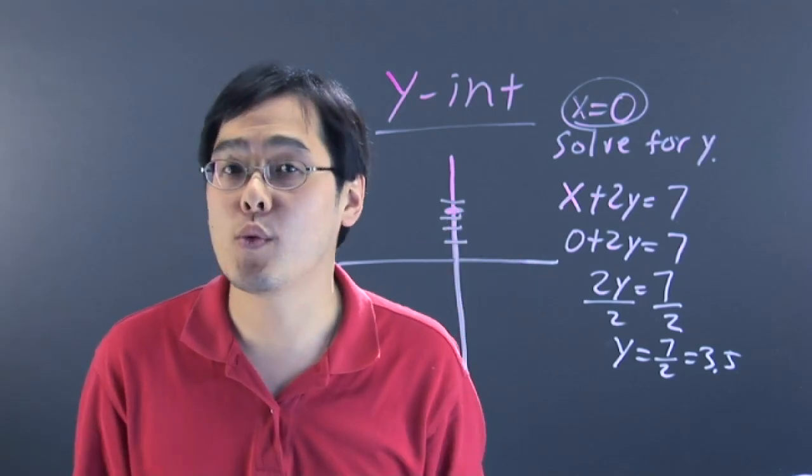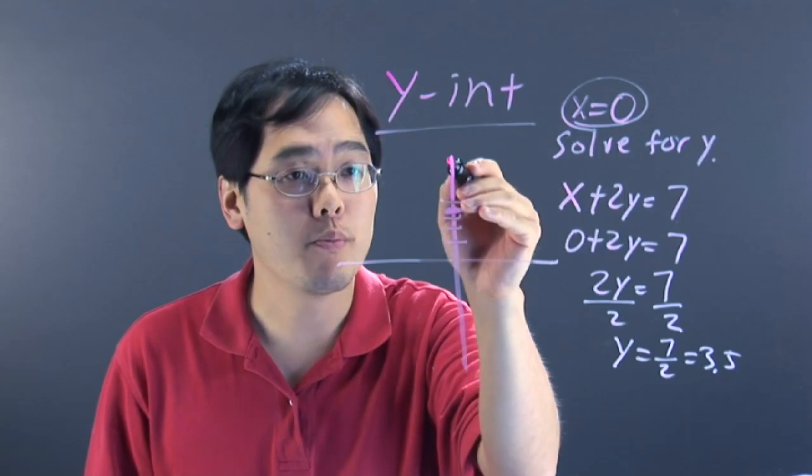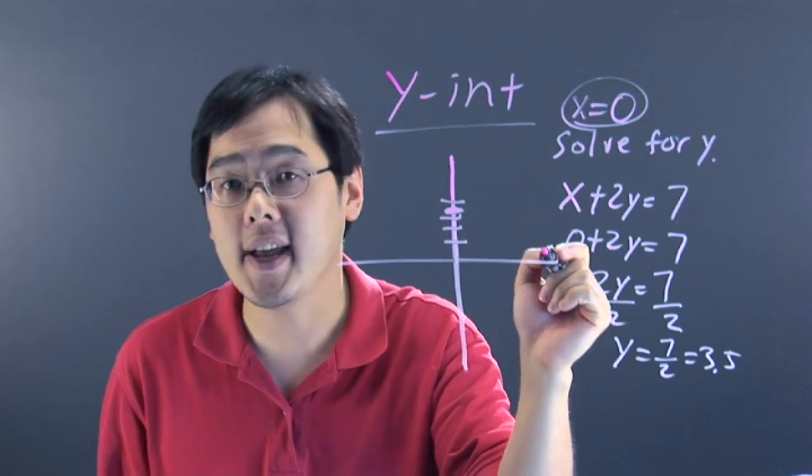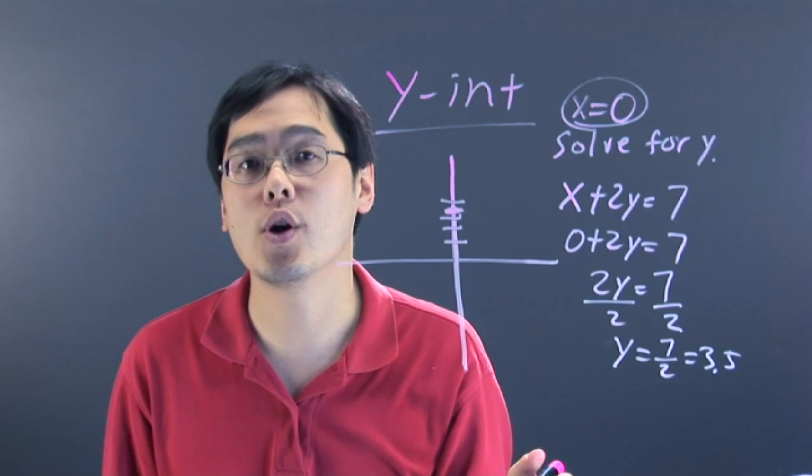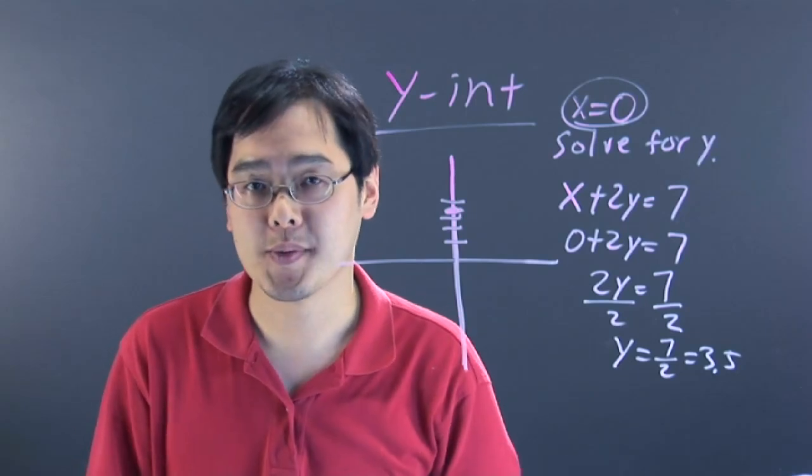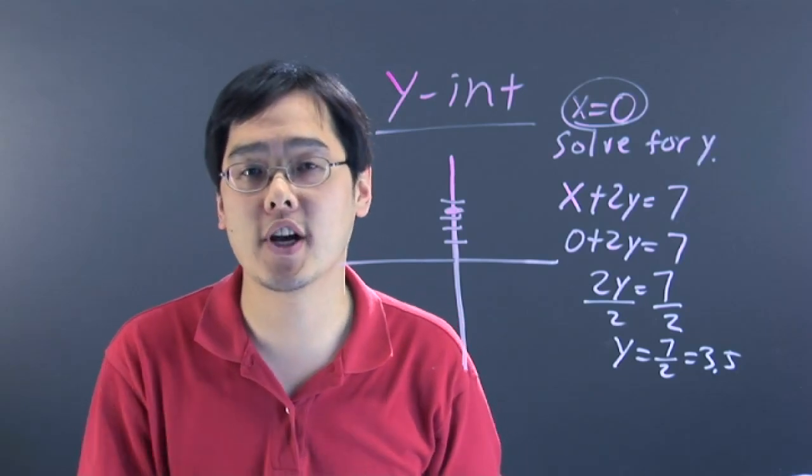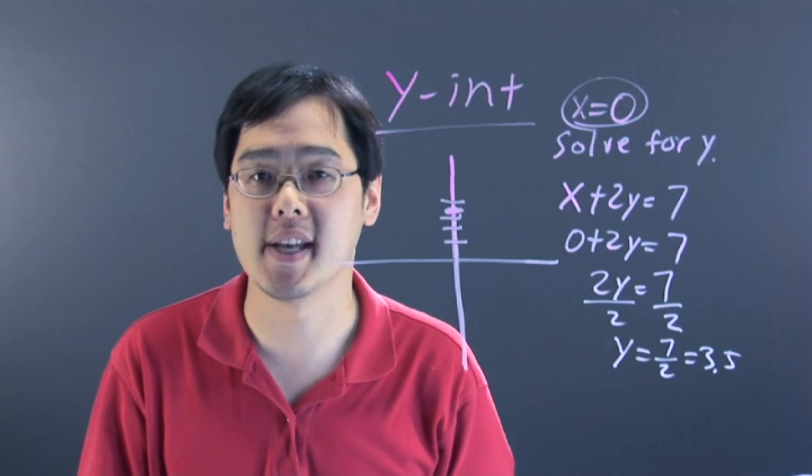But basically, that's what the y-intercept is. It's a point that touches the y-axis for sure. And to find it, you always let x be zero and then just find out what y is. So I'm Jimmy Chang and that's a brief introduction on what is the y-intercept in math.